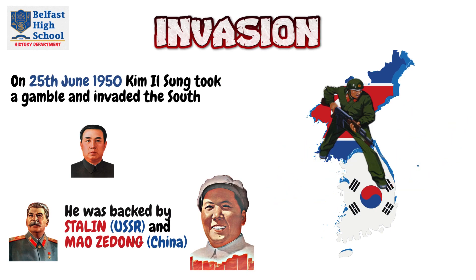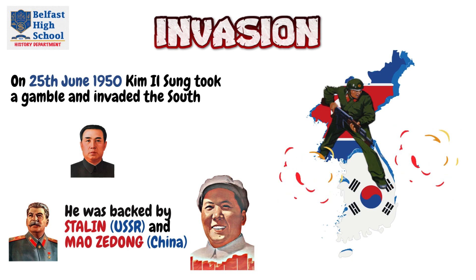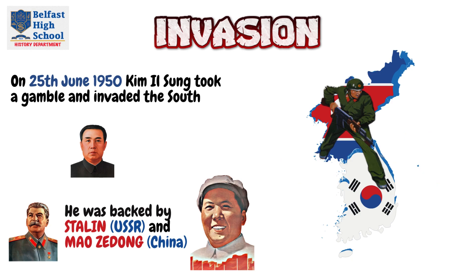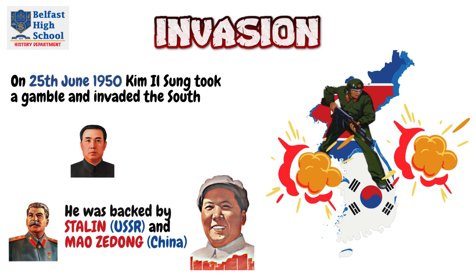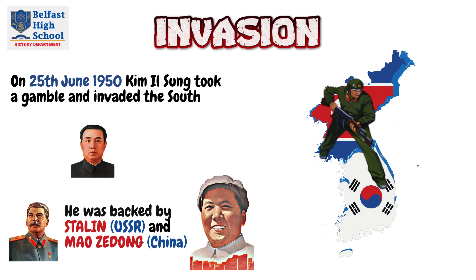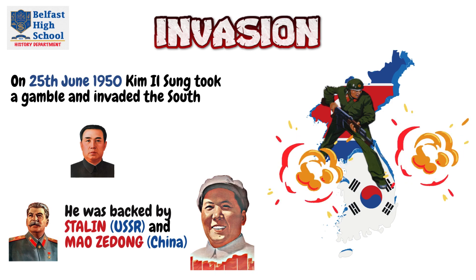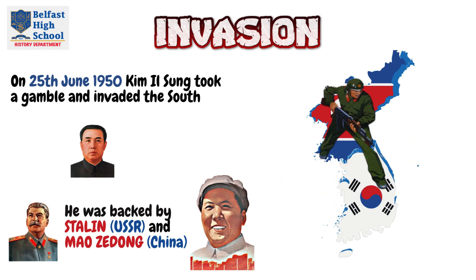On the 25th of June 1950, Kim Il-sung took a gamble backed by Stalin in the Soviet Union and Mao Zedong in China, and took that gamble to invade the South, believing that they could push the Western and Southern forces completely out and take over all of Korea.